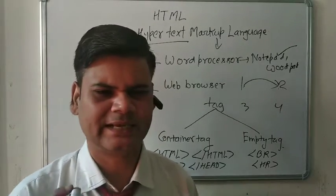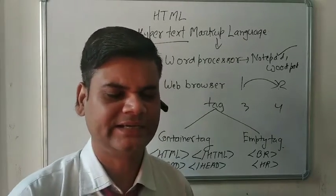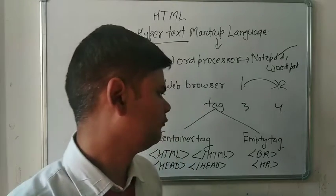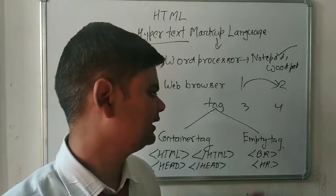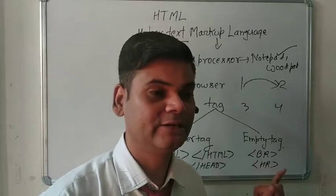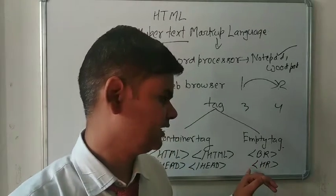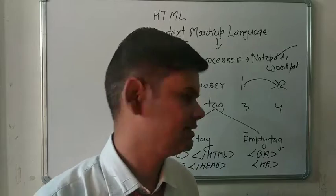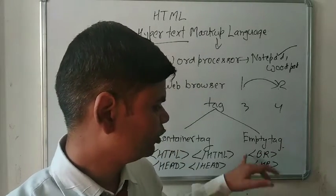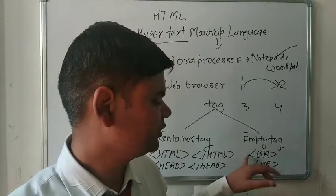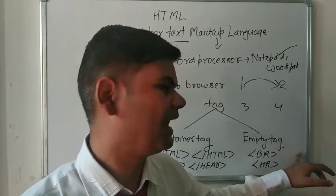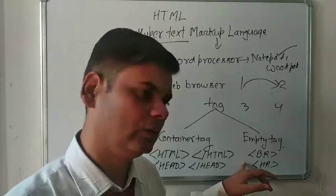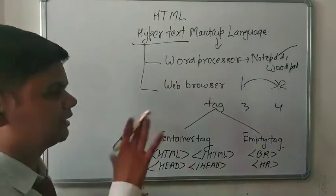The second thing is the empty tag. In an empty tag we use only the single starting tag — we don't have an ending tag. For example, the BR tag is used for a line break and the HR tag is used for horizontal lines. In both these tags we are using only the starting tag, not the ending tag, that's why they are known as empty tags.